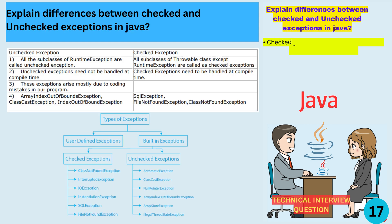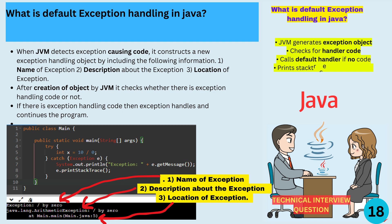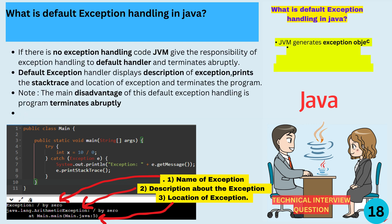Unchecked exceptions vs checked exceptions: all the subclasses of RuntimeException are called unchecked exceptions. All subclasses of the Throwable class except RuntimeException are called checked exceptions. Unchecked exceptions need not be handled at compile time, while checked exceptions need to be handled at compile time. These exceptions arise mostly due to coding mistakes. The JVM creates an exception object with the exception name, description, and location. If there is exception handling code, the exception is handled; if not, it is handled by the default handler, which displays information about the exception and terminates the program abruptly.